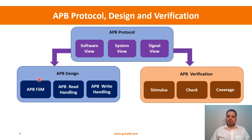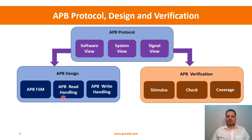We will build a small APB slave design which can be used for any peripheral IP for implementing the register block. As part of that, we will implement the APB FSM given in the specification, then show how to handle APB read so that you can read the registers of a particular IP, and then showcase how to handle APB write so that you can program a particular register. That's where we do the design, moving on to APB verification.